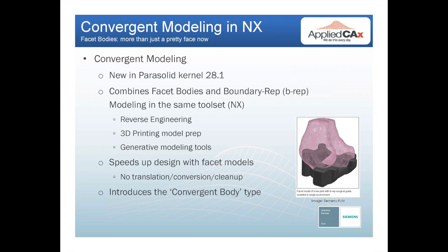One of the new things is convergent modeling, and it's new in the Parasolid kernel 28.1. I don't know if this is something Siemens will release to other vendors who license the Parasolid kernel, like SolidWorks or Mastercam. What convergent modeling does is essentially allow you to do facet modeling and traditional boundary rep modeling and put them together.